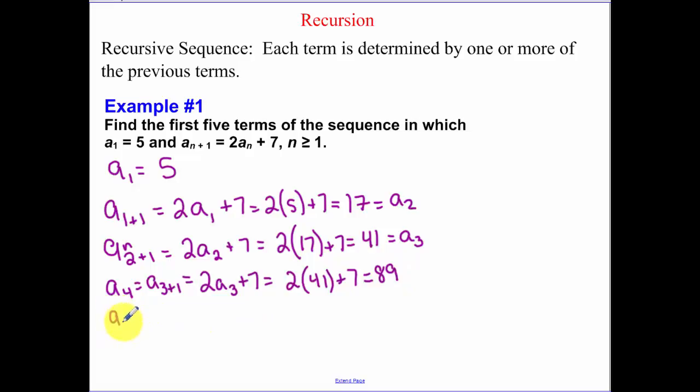To get my fifth term, or my a sub, because I need to change this to n plus 1. So what plus 1 gets me 5? 4 plus 1 gets me 5. 2, a sub 4, plus 7, which is 2 times the fourth term plus 7. My fourth term was 89. And that gets me 185.